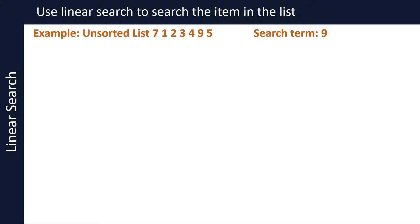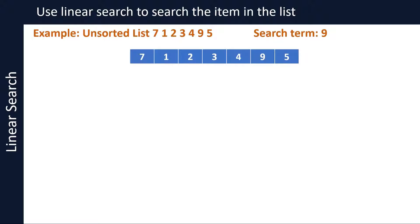Let's take an example and apply the steps in the linear search algorithm. Imagine you have been given an unsorted list of numbers — 7, 1, 2, 3, 4, 9, and 5 — that you can see on your screen, and you need to search for the number 9 in the list. Now let's work through the steps. Compare the first item in the list, 7, with 9, which is the value we are searching for, or in other words the search term.